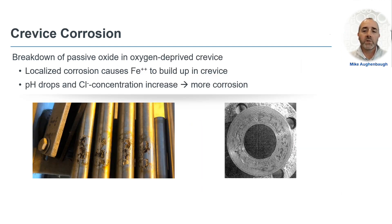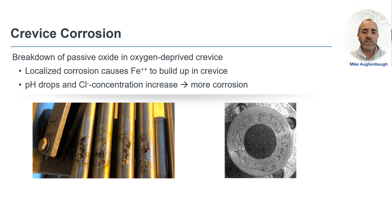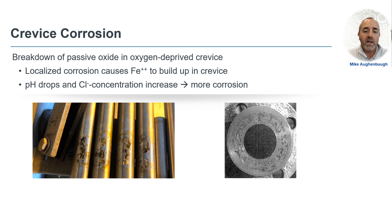Just like pitting corrosion, crevice corrosion also starts with the breakdown of the passive oxide layer. The formation of shallow pits occurs within a tight crevice — for example, between tubing and a plastic tubing clamp — and the shallow pits can grow large over time and cover the whole crevice. In a crevice, the iron ion dissolves into liquid present in the crevice. Because the crevice is so tight, the iron ions cannot readily diffuse out, so their concentration increases. In salt water, negatively charged chloride ions are attracted by the positively charged iron ions and begin to diffuse into the crevice. Crevice corrosion is dangerous because it often occurs at a much lower temperature than pitting corrosion.